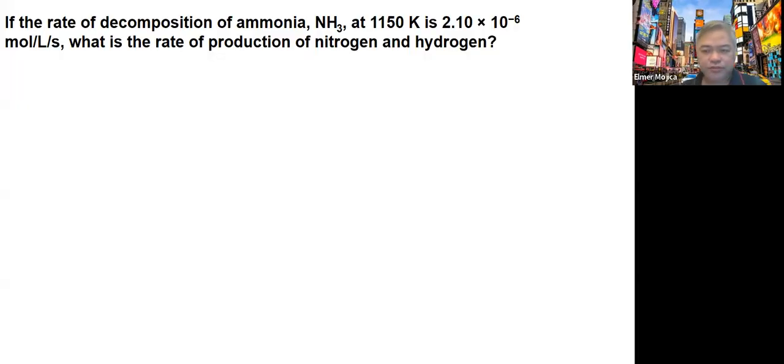Now let's start to solve relative rates. If the rate of decomposition of ammonia at 1150 K is 2.1 times 10 to the negative 6 molars per second, what is the rate of production of nitrogen and hydrogen?